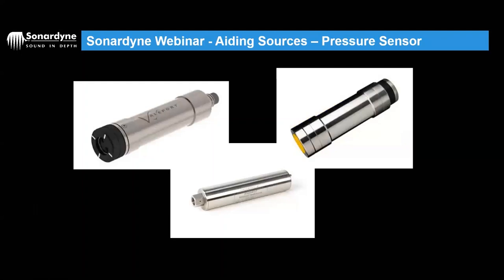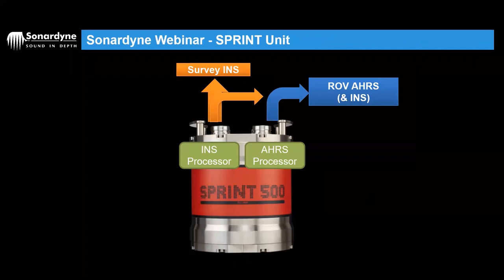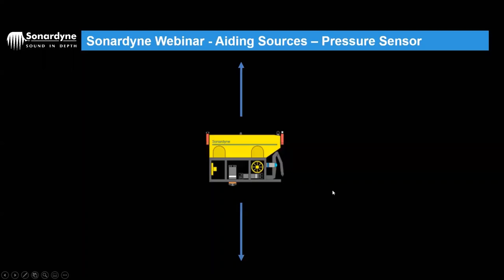We can use pressure sensors for Z-axis positioning. Our Z accelerometers measure upwards and downwards movement by predicting it based on movement, but to assist with 3D positioning of the vehicle throughout the water column, we need to assist them with a pressure sensor.